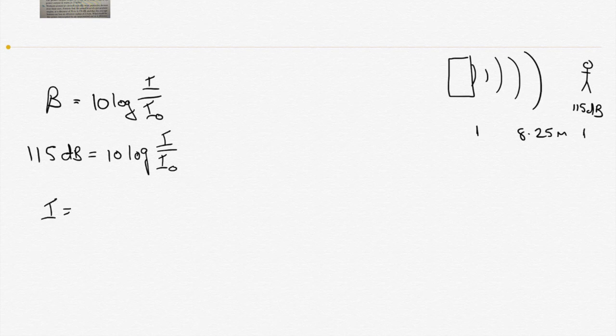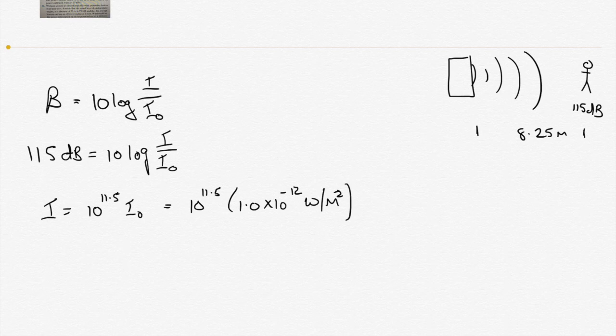So I then becomes, when we get rid of the log, we get 10 to the power of 11.5 times I0. And that becomes 10 to the power of 11.5, which is sort of a strange number to have as a power, times the threshold of human hearing, which is commonly taken to be 1.0 by 10 to the minus 12 watts per meter squared. So that's an intensity, which is a power per unit area, and its units are watts per meter squared.